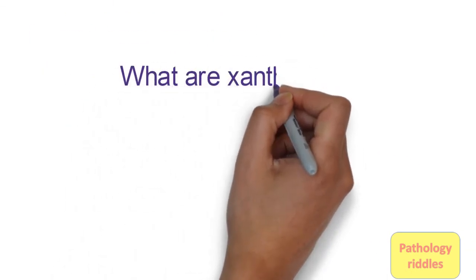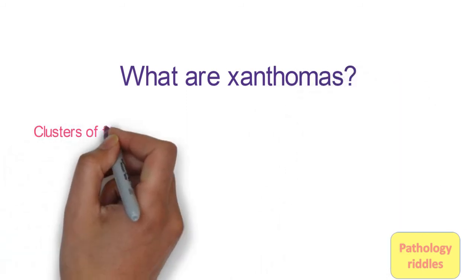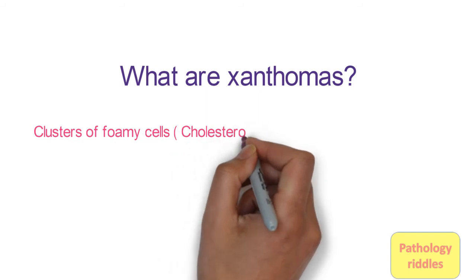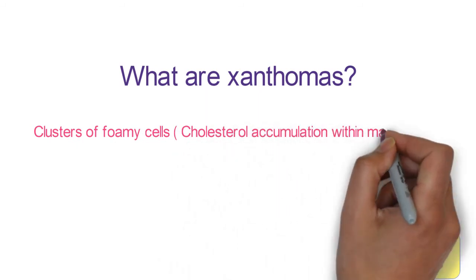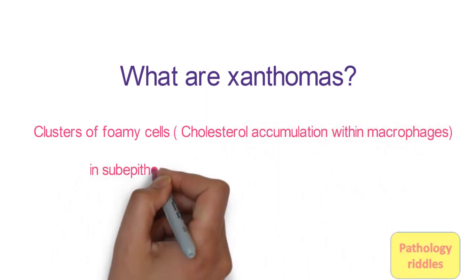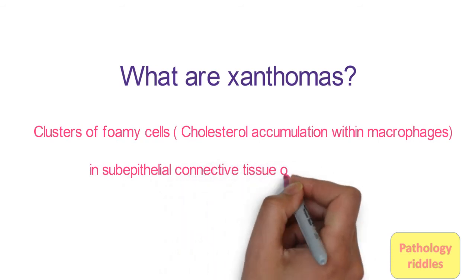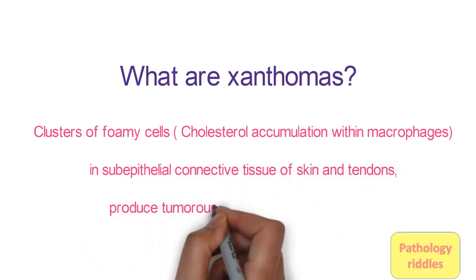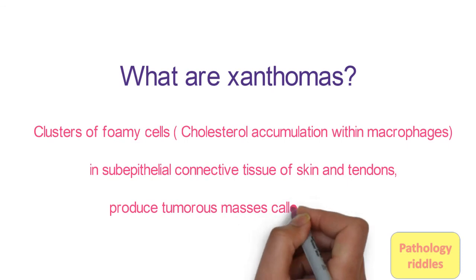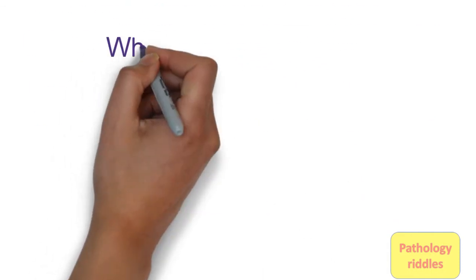Seventh question: What are xanthomas? Xanthomas is a cluster of foamy cells — that is, cholesterol accumulation within the macrophages in sub-epithelial connective tissue of skin and tendon — which produces a tumorous mass called xanthomas.